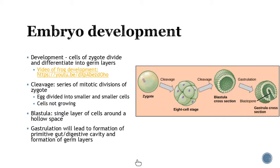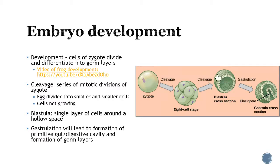Development is how the cells of the zygote divide and differentiate into different germ layers. Initially you have the zygote; then it goes through a series of mitotic cell divisions — dividing and dividing — until you get a ball of cells called a blastula. Inside the blastula is what's called an inner cell mass.